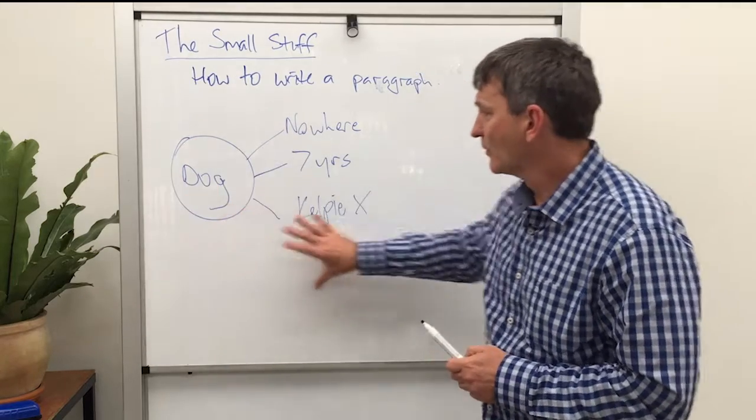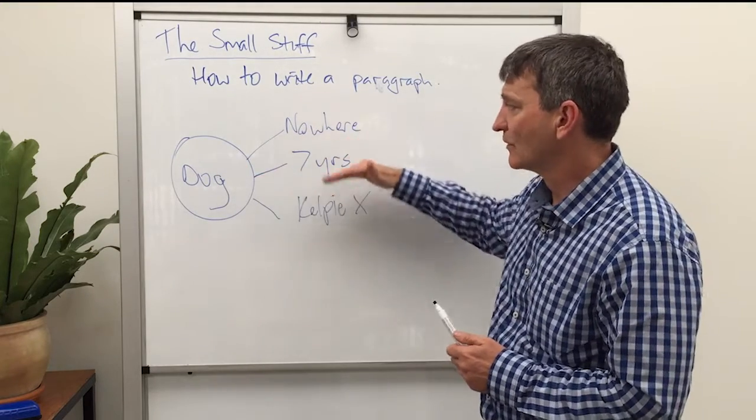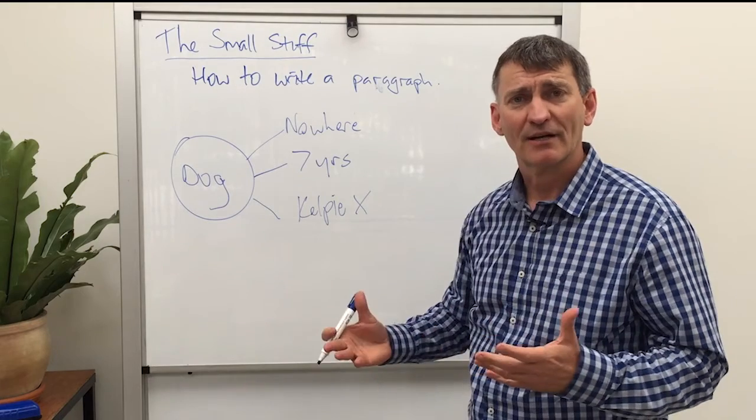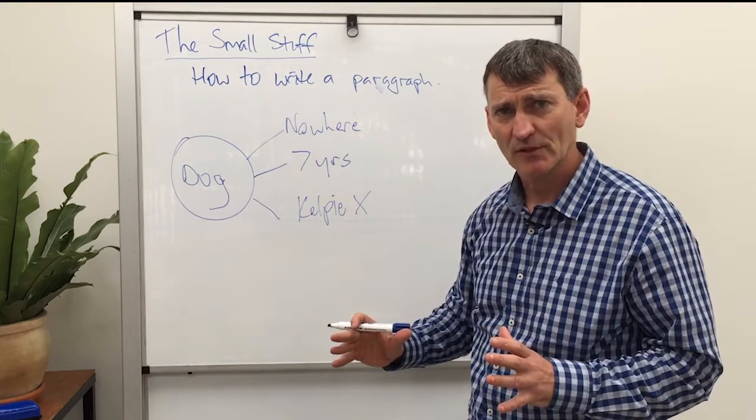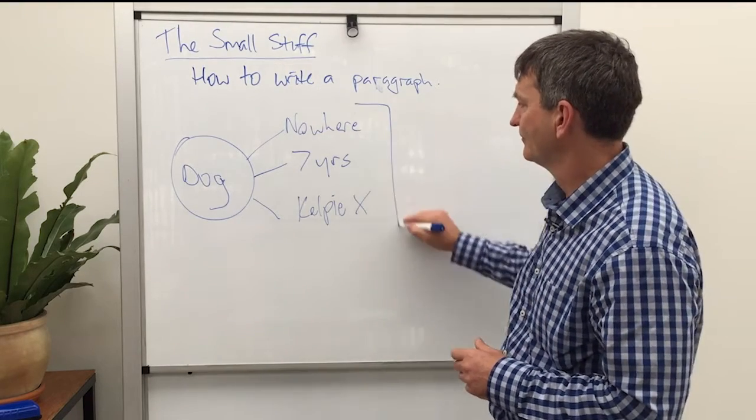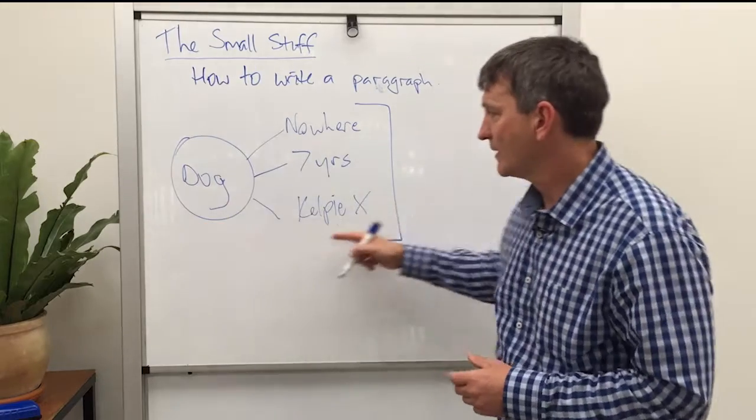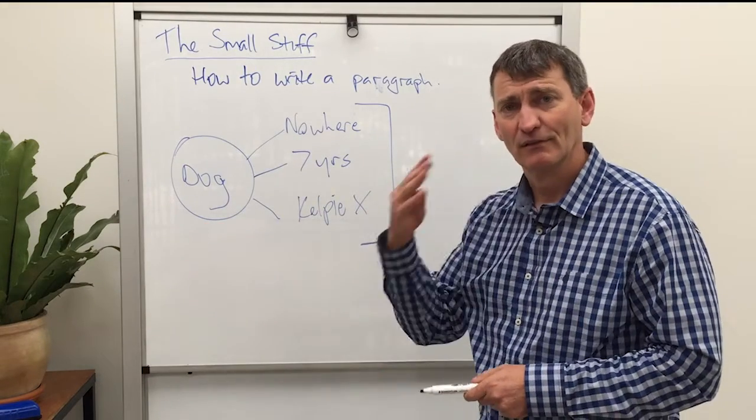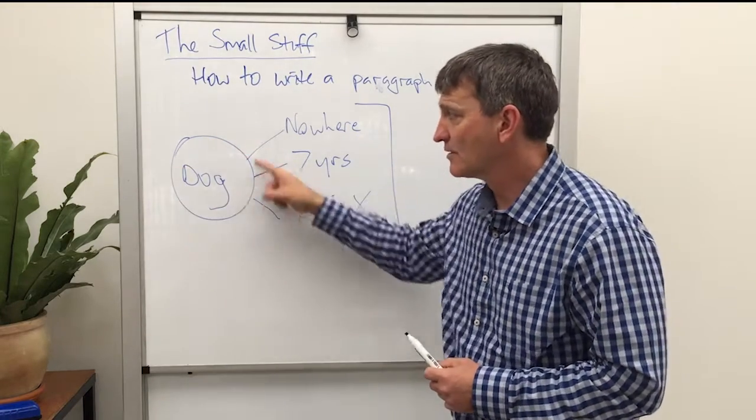So we've got all this information about a dog and we've got three points. The way a paragraph can be structured in very simple terms is this. This becomes a paragraph of four sentences. Topic sentence.